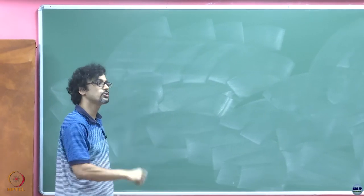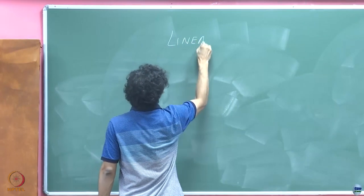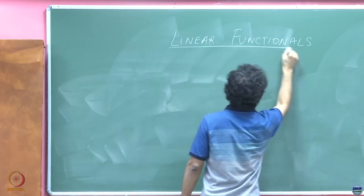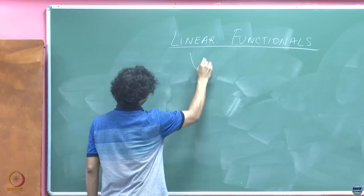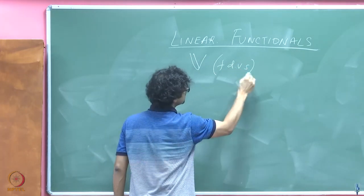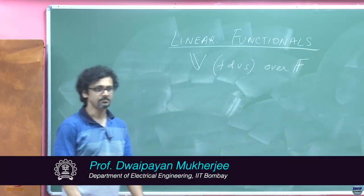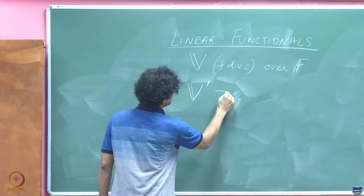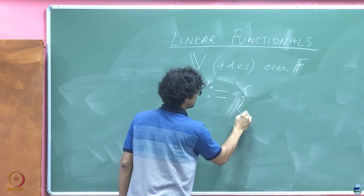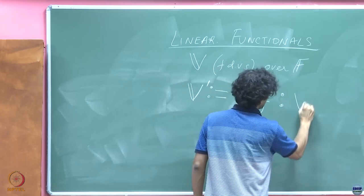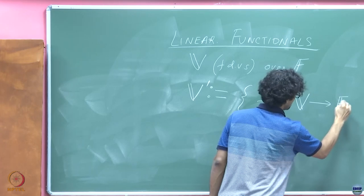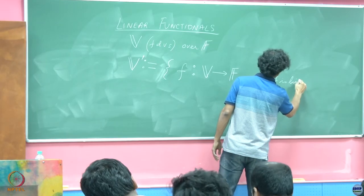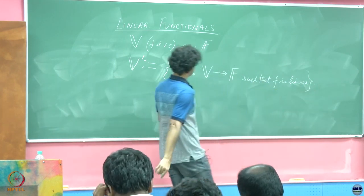So, now that we have seen linear transformations, we will define a new sort of objects called linear functionals. Suppose you have a vector space, finite dimensional vector space over a field F. We define this object V prime in the following manner: F which is a mapping from V to the field such that F is linear.